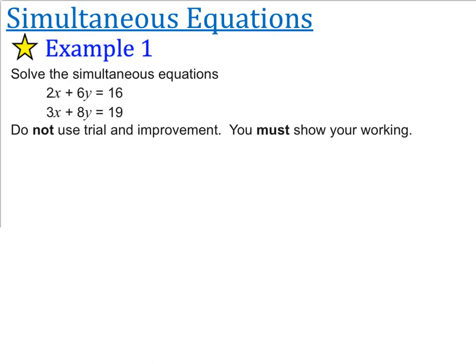First thing we want to do is we want to try to get the x's the same. There's not something that I can easily multiply by 2 to get to 3, and same with to get from 3 to 2. Also 6 and 8 — there's nothing that I can get easily from 6 to 8, or 8 to 6. So I'm actually going to have to do two multiplications this time. I'm going to have to multiply the top equation and the bottom equation. So you can either make the 2x and the 3x into the same number, or the 6y and the 8y into the same number. I'm going to start with the x's.